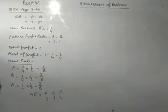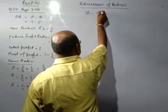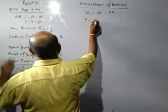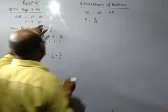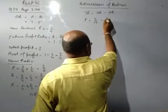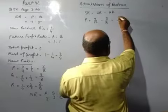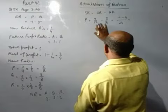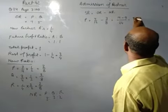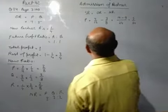Now you will calculate the sacrificing ratio. Sacrificing ratio equals old ratio minus new ratio. Now P old ratio, that is 7 by 12, 7 plus 5 equals 12, 7 by 12, and P new ratio 3 by 8.